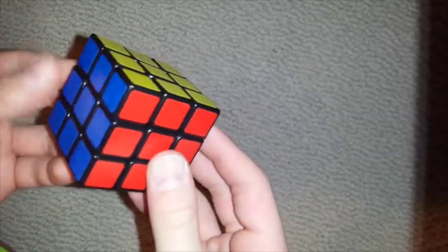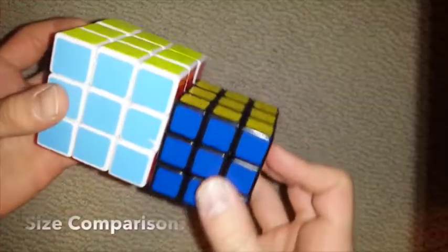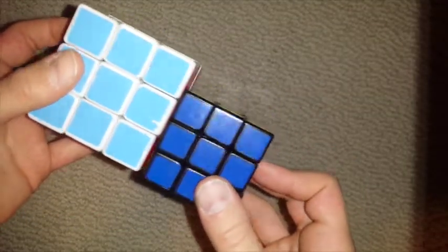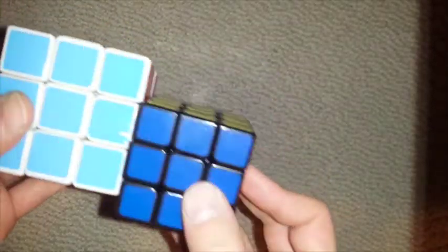The ShengShou Ling Long is ShengShou's newest 3x3 cube, it's a mini 46mm cube. As compared to a standard 57mm ShengShou Wind, it's quite a bit smaller, and I'm not going to get my ruler out, but I'm pretty sure I can trust ShengShou that this is indeed 46mm.